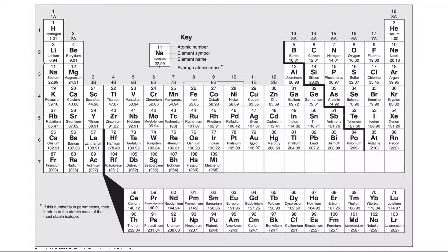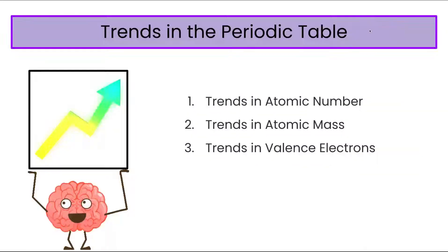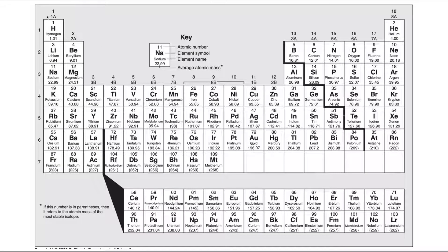And then the next row starts with 11 and keeps going up to 18 and so on. So you can see that as you go across a period, your atomic number is going up. And as you go down a group, your atomic number is also going up. So that is our trend in atomic number. Knowing the atomic number is useful when you're looking for an element on the periodic table.